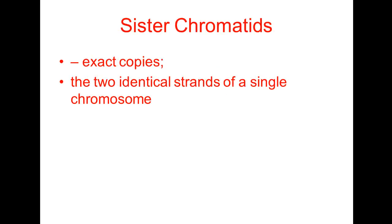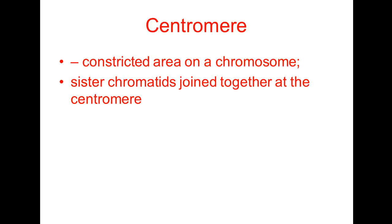Sister chromatids are exact copies of each other — they are the two identical strands of a single chromosome. Another term to be familiar with is the centromere. The centromere gets its name because it's usually in the center of the chromosome, but not always. The centromere is a constricted, dense area on the chromosome that holds the two sister chromatids together.